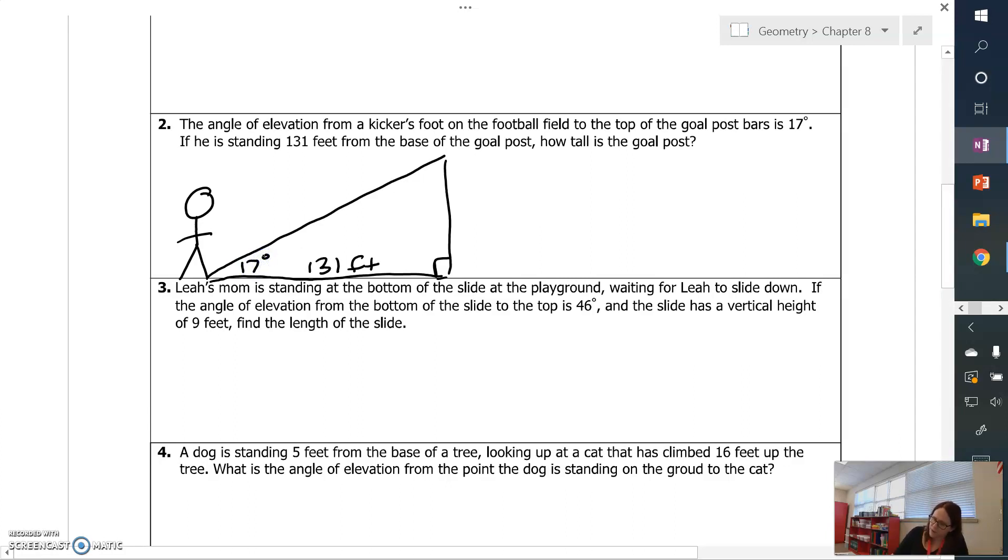And how tall is the goalpost? There's X. So I've drawn my picture. Now just like in section 8.3, label your triangle. So this one is opposite. This one is adjacent.